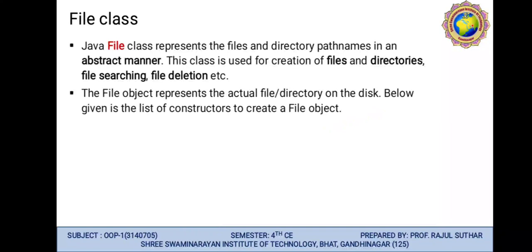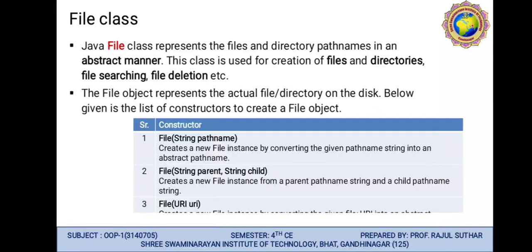The file object represents the actual file or directory on the disk. Below is a list of constructors to create a file object. The constructor File(String pathname) creates a new file instance by converting the given pathname string into an abstract pathname. We can also use File(String parent, String child) as a constructor. File URI is also one constructor — if you work with URI, the output file will be in the form of a URI, also called a URL.